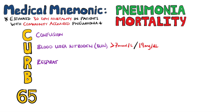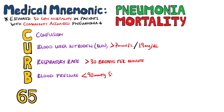R is for the respiratory rate — 30 breaths per minute or higher is considered significant. B is for blood pressure, below 90 mmHg on the systolic pressure, or 60 mmHg on the diastolic pressure. Finally, the 65 represents ages over 65.